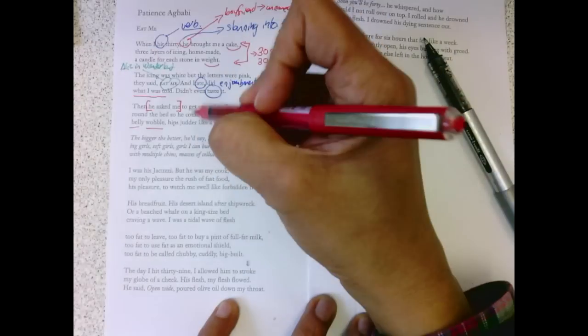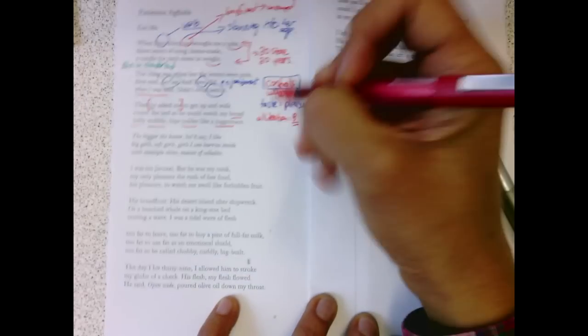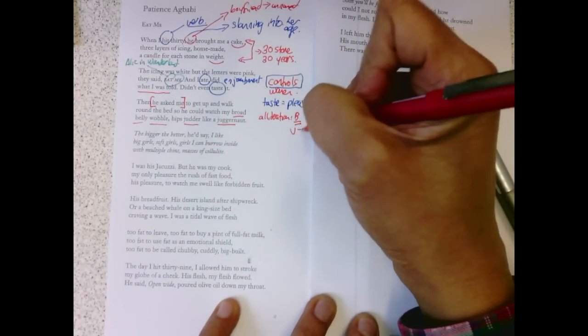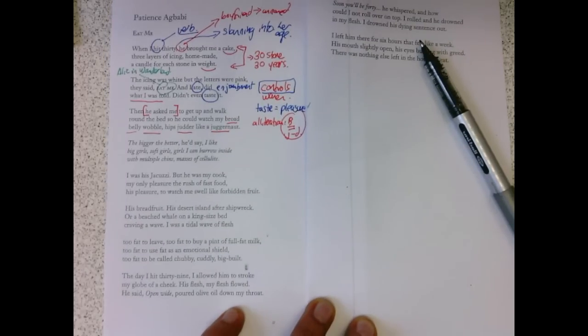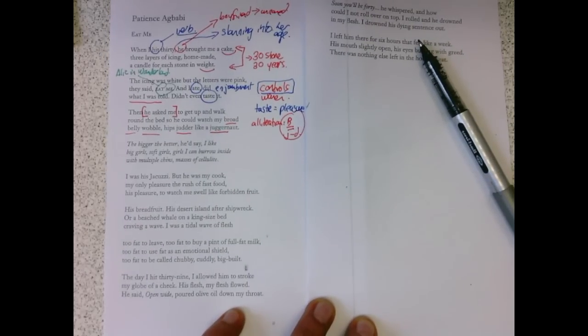That alliteration, bees, really emphasizes the fat, really emphasizes the movement. Hips judder like a juggernaut. We get that, again, the J's and the D's, all of that is to emphasize. I think what's really disturbing about this poem is in terms of women's self-perception and their presentation in the media.